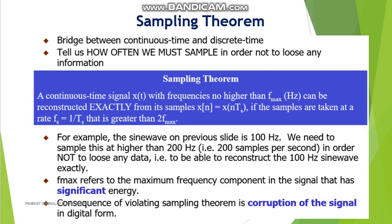A continuous time signal x(t) with frequencies no higher than f_max hertz can be reconstructed exactly from its samples, where x[n] equals x(nT), if the samples are taken at a rate fs = 1/Ts that is greater than twice f_max. This is the statement of the sampling theorem.